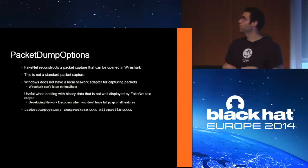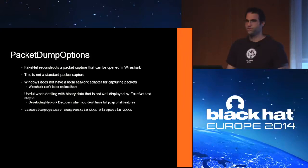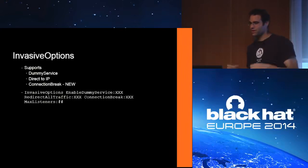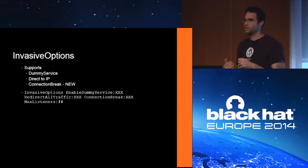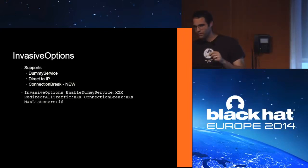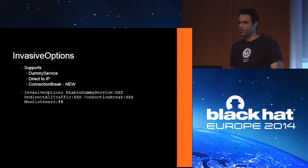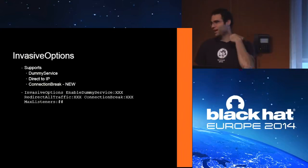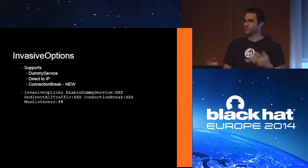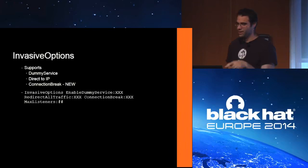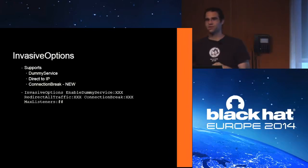There are output options: do you want to dump the HTTP POST blobs? If a malware does an HTTP POST, you can dump that blob. The so-called invasive options are the ones that use LSP — they only support Windows XP right now because LSP was deprecated. All other features work on newer OSes. Another option is redirect all traffic: even if something doesn't do a DNS request, it'll redirect it to FakeNet.